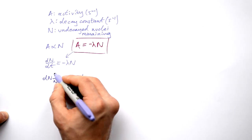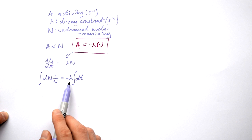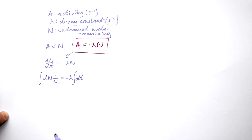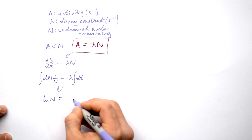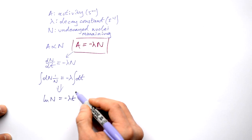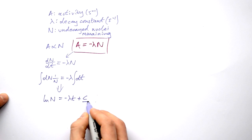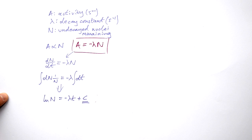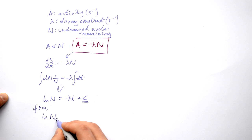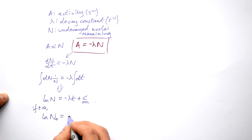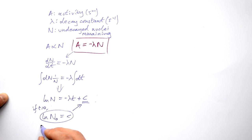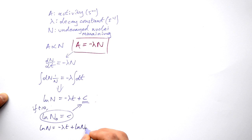This is just to show you where everything comes from. We take the constant out of the integration, giving us the natural log of N equals minus lambda times t, plus some constant. Now we need to find that constant. If we take t to be 0, we have ln of our initial number of nuclei N₀ equals c. So we can substitute that in: ln N equals minus lambda t plus ln N₀.